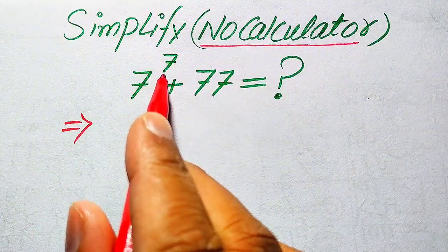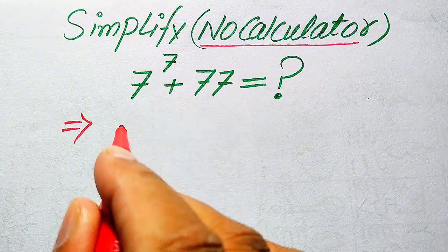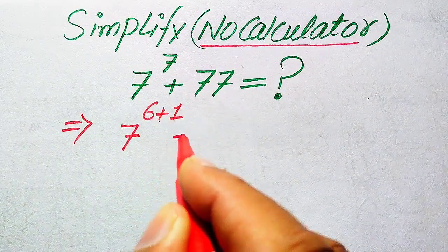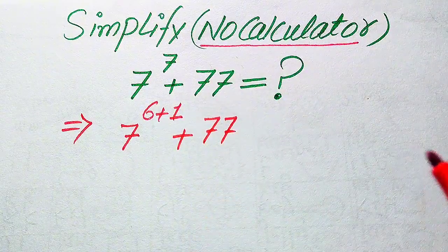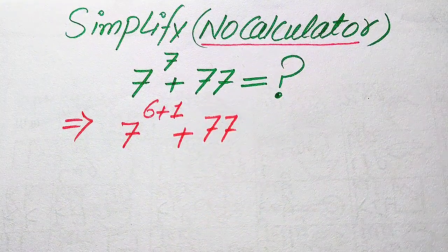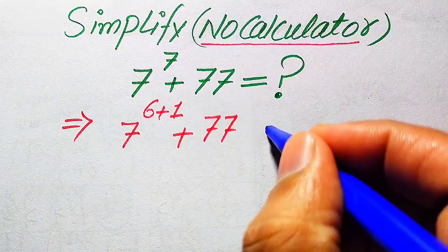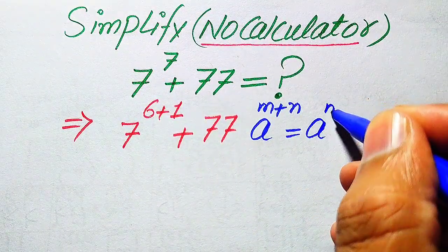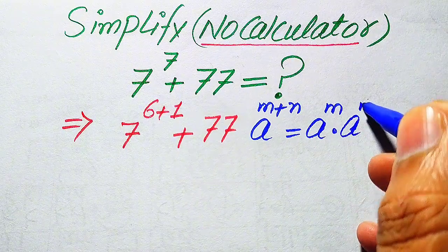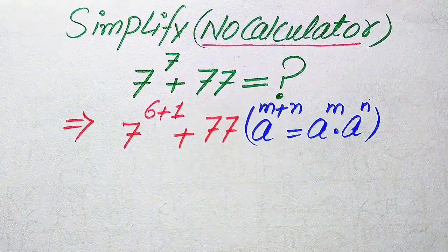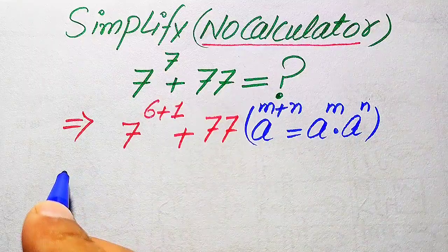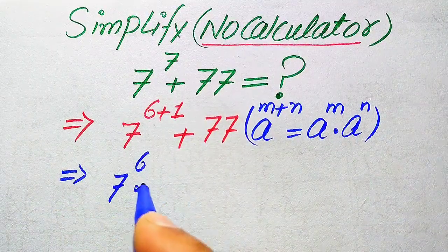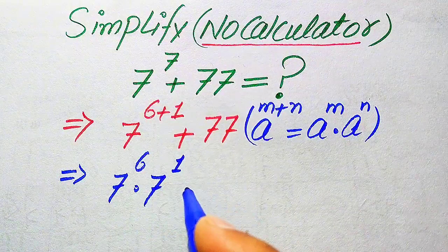The very first thing we do is focus on the exponent of this term. Its exponent is 7, so we write it as 7 to the power of 6 plus 1, plus 77. Now we use the exponential law: if we have a to the power of m plus n, it equals a to the power of m multiplied by a to the power of n. Applying this rule, we break the exponent as 7 to the power of 6 multiplied by 7 to the power of 1, plus 77.